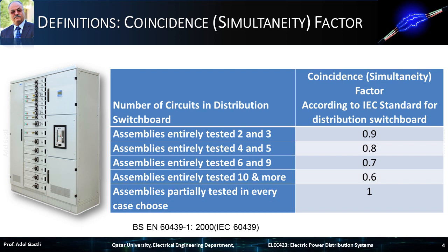The fully tested assemblies are more trusted in their ratings, and therefore coincidence factor values below 1 can be considered, while those partially tested may not be fully trusted in their ratings, and therefore it is recommended to take a unity coincidence factor, which means also unity diversity factor, and hence diversity in the load shall not be considered. According to this table, for assemblies entirely tested with 2 and 3 circuits, the standard coincidence factor is 0.9; for 4 and 5 circuits, 0.8; for 6 to 9 circuits, 0.7; and for more than 10, it is 0.6. For assemblies partially tested, in every case we choose the coincidence factor as unity. Notice that the larger the number of circuits, the lower is the coincidence factor.